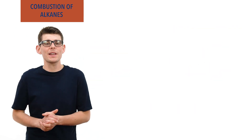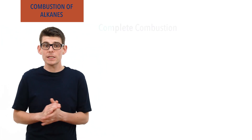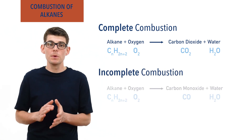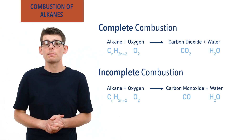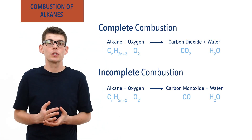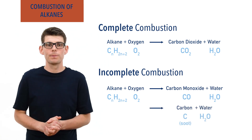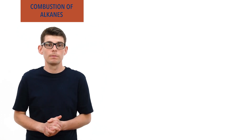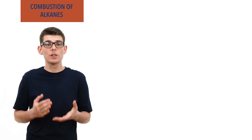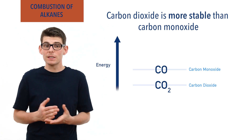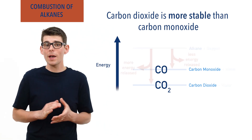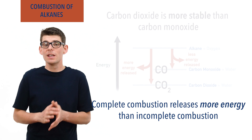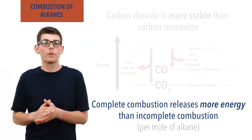So the combustion of an alkane can be complete or incomplete. For complete combustion, carbon dioxide and water are produced. For incomplete combustion, carbon monoxide and water are produced. For incomplete combustion reactions with very low oxygen levels, solid carbon soot can be formed. When using alkanes as fuels, complete combustion is always preferred for two main reasons. The first is energy: carbon dioxide is more stable than carbon monoxide, and this means the formation of carbon dioxide releases more energy than the formation of carbon monoxide. Complete combustion will release more heat energy than incomplete combustion per mole of the same alkane.